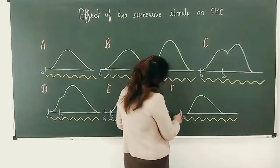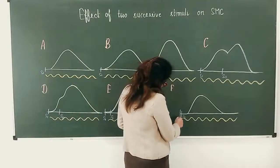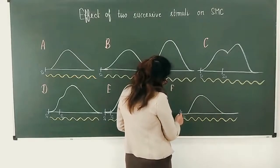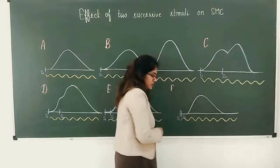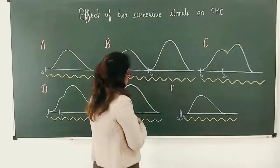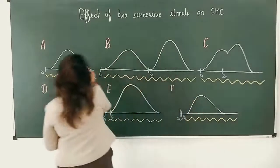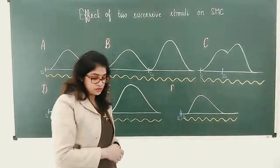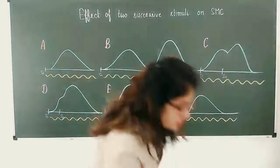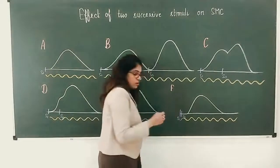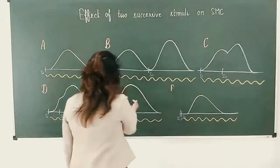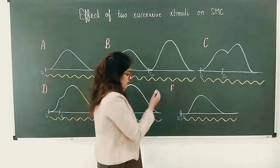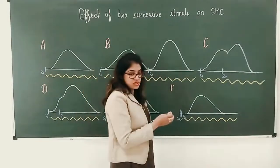Here we can see the first stimulus and the wave was obtained. The second stimulus falls in the initial part of the latent period. Now we can see the height of the wave is similar to that of the original wave. So why is the height similar, or why could summation not occur here? In the previous curves there was summation of waves, but in this curve there is no summation of waves.